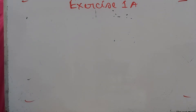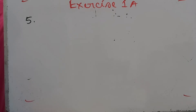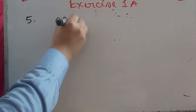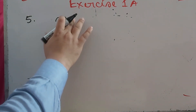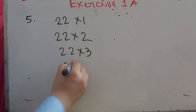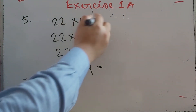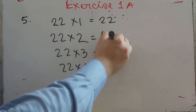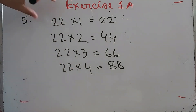Number 5: Write down three multiples of 22. We multiply 22 by 1, 2, 3, 4, and so on. So 22 times 1 is 22, 22 times 2 is 44, 22 times 3 is 66, 22 times 4 is 88. Any result from multiplying 22 by a whole number is a multiple of 22.